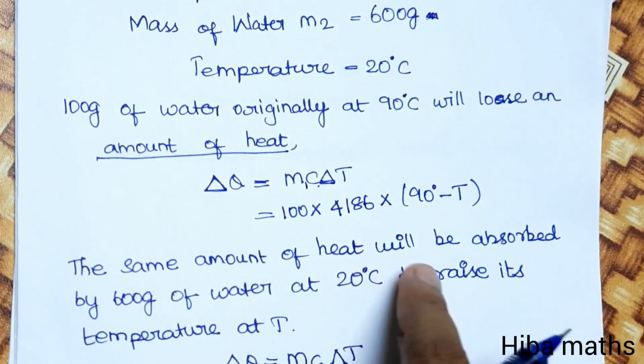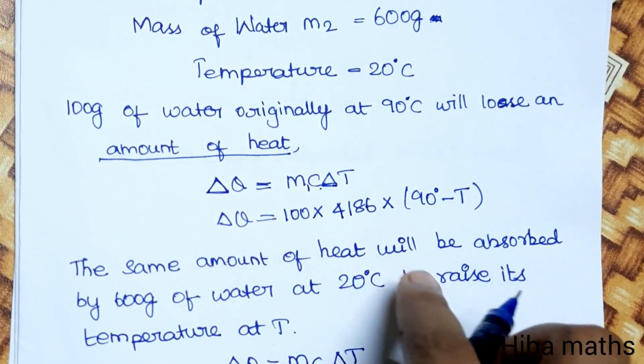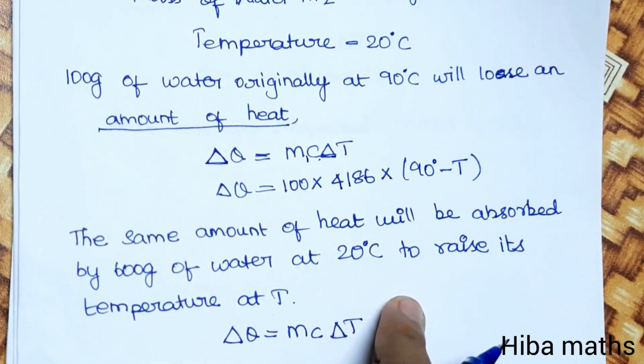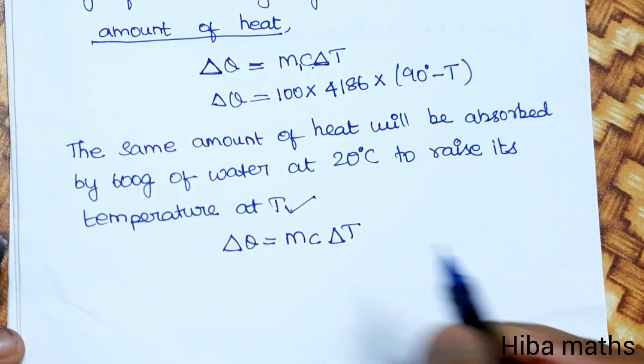The same amount of heat will be absorbed. So the heat is absorbed by 600 grams of water at 20 degrees Celsius to raise its temperature to T.